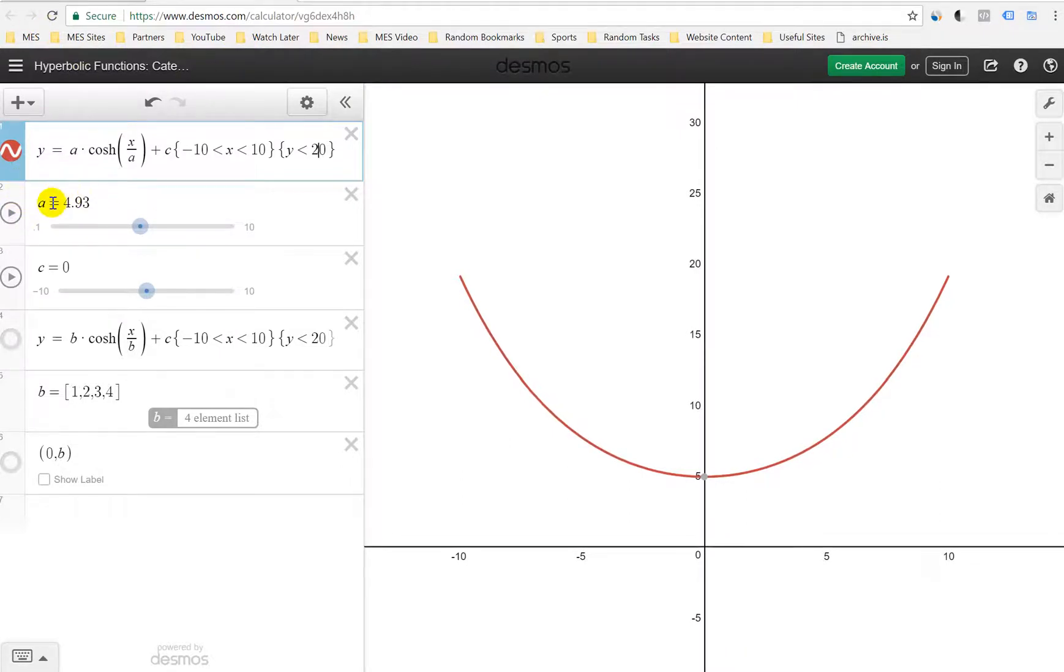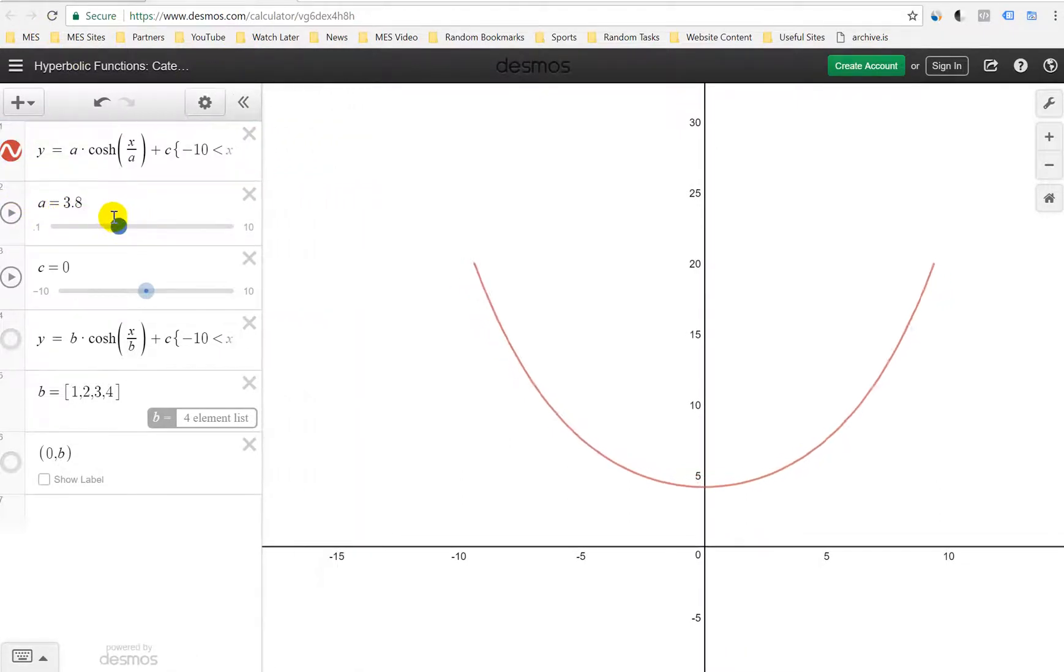And now here's the a value here. You could slide it and change these values, or you could just press play and see what happens. That's pretty cool. So as you can see there, let me just start slowing it down.